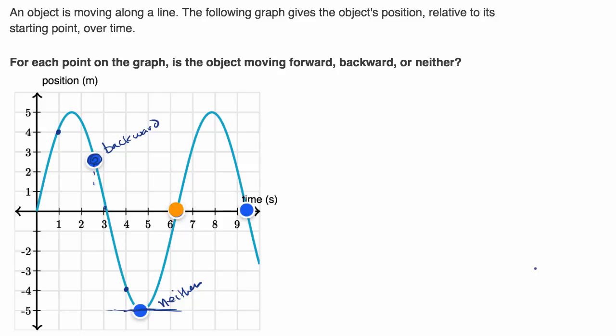So we can use that same technique to think about this point. The slope is positive. And we see that right at that moment, it looks like we are at the starting point. But if you fast forward even a fraction of a second, we are now in front of our starting point. So we are moving forward.